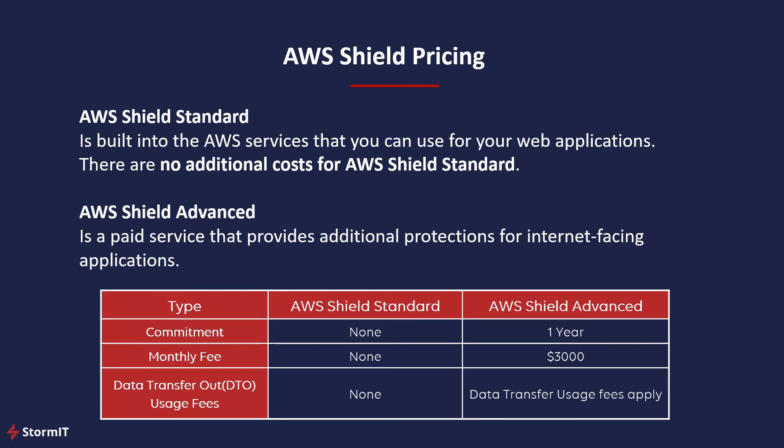The last section of this video is about AWS Shield pricing. For Shield Standard, this service is built into other AWS services and there are no additional costs. AWS Shield Advanced is a paid service that provides additional protections for internet-facing applications. You have to commit for one year and pay a monthly fee plus data transfer usage fees.